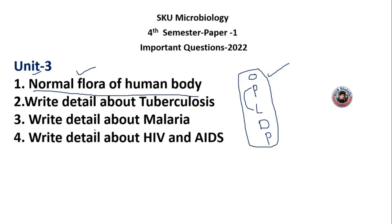The fourth important topic is HIV and AIDS. This is especially important. We will observe that TB is a disease, malaria is a disease, and HIV AIDS is a disease — all three are important diseases to study and write about.